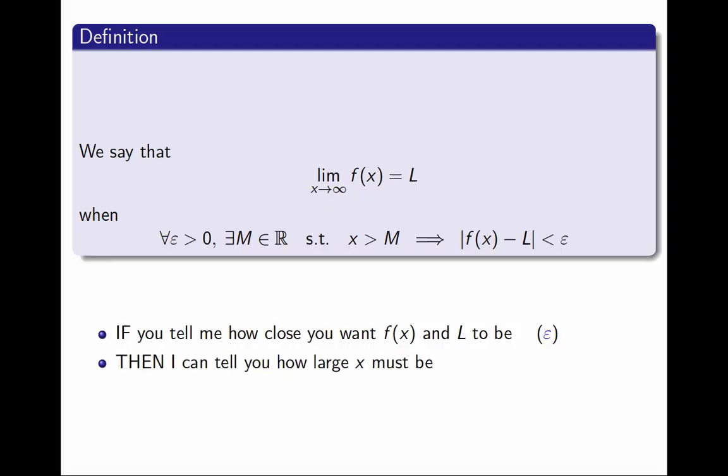then I can tell you how large x must be, meaning I can produce M. And for every ε you give me, you tell me how close you want them, I can produce an M. I tell you how large x is.